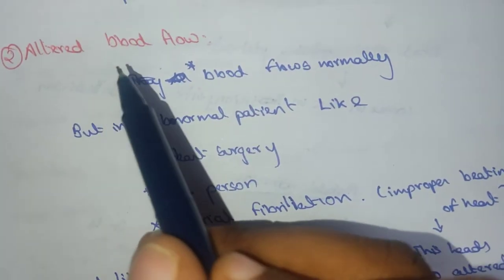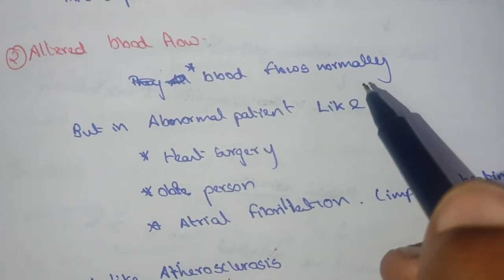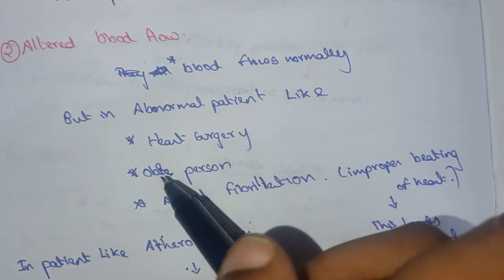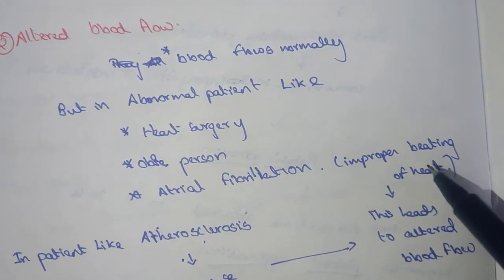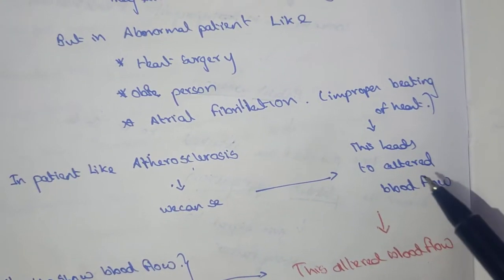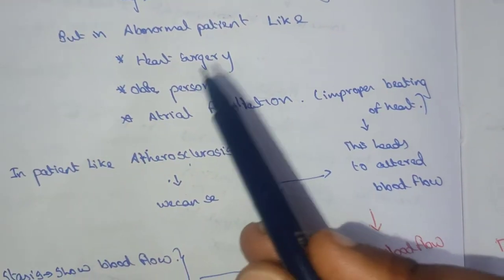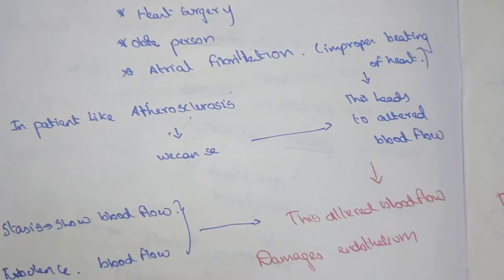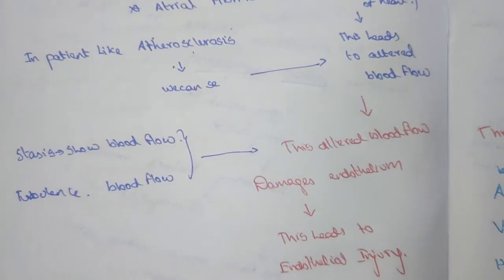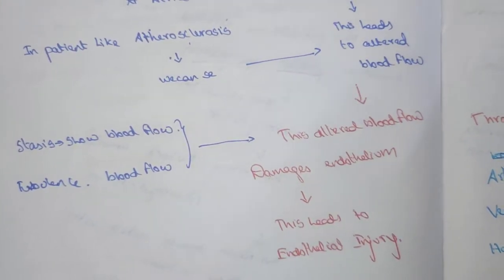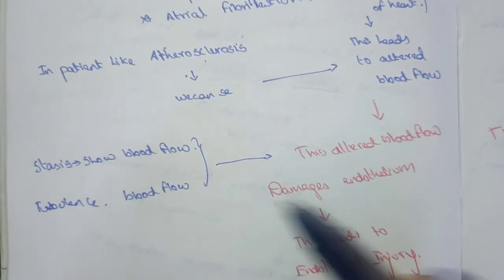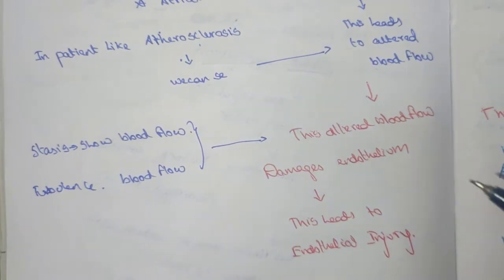The second factor given by Rudolf Virchow is altered blood flow. Normally blood flows normally, but in abnormal patients — such as those undergoing heart surgery, obese patients, patients with atrial fibrillation (improper beating of the heart), or atherosclerosis — altered blood flow is seen. This altered blood flow damages the endothelium, leading again to endothelial injury, platelet adhesion, platelet aggregation, platelet plug formation, and ultimately thrombus formation, stopping circulation.